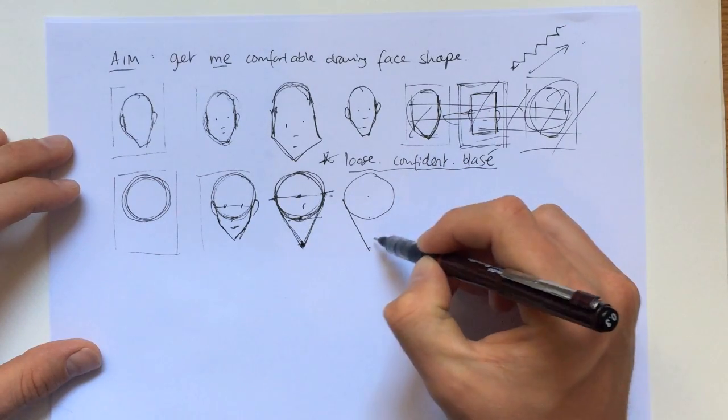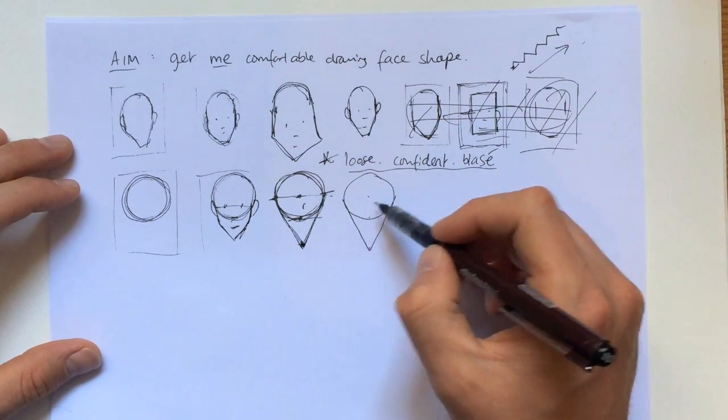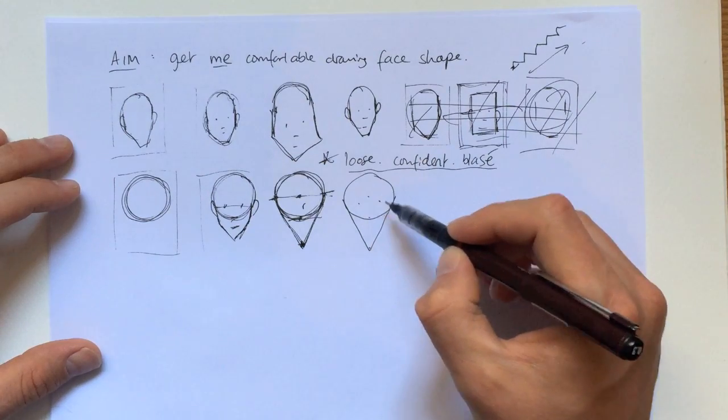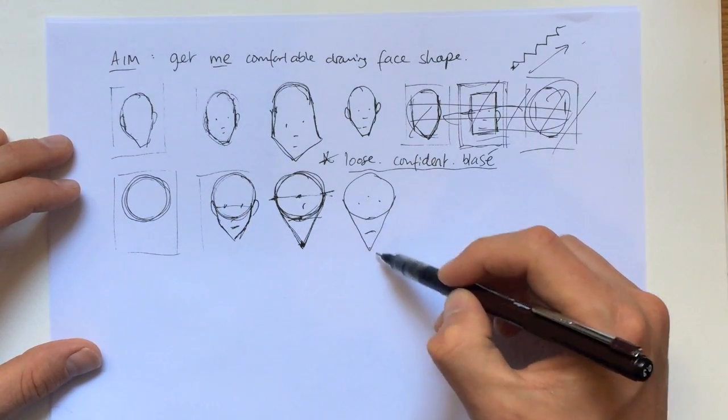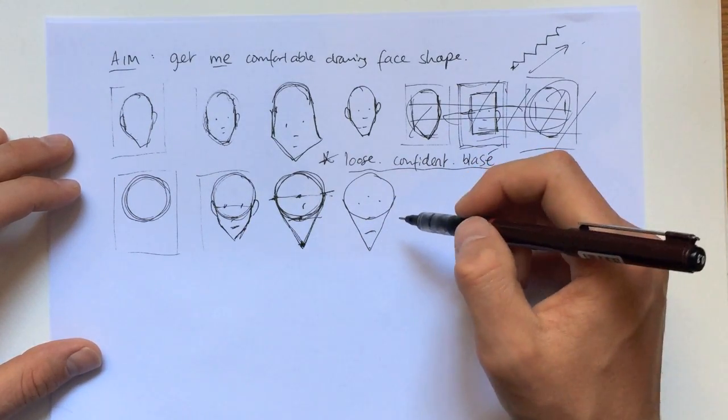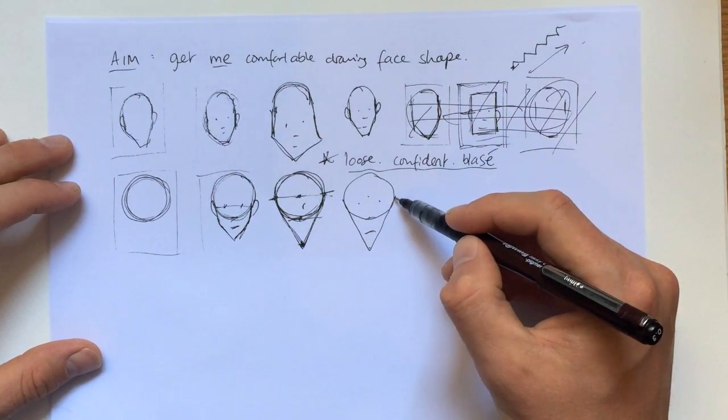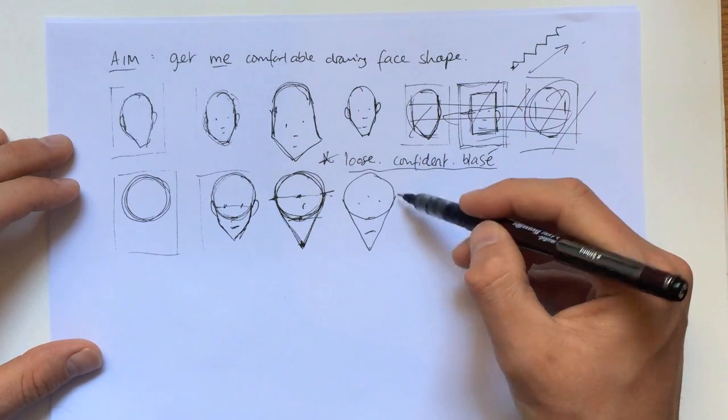So now you've got an ice cream cone. All right, so that's not really a face. Look how unhappy he is because he's got big pointy chin. He needs to have a stronger jawline. We're assuming it's a he. So what we do, we draw these lines here.